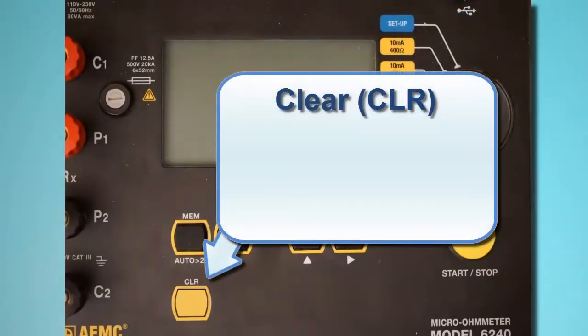Below the memory button is the CLEAR button, labeled CLR. This removes the selected test from the instrument's memory.